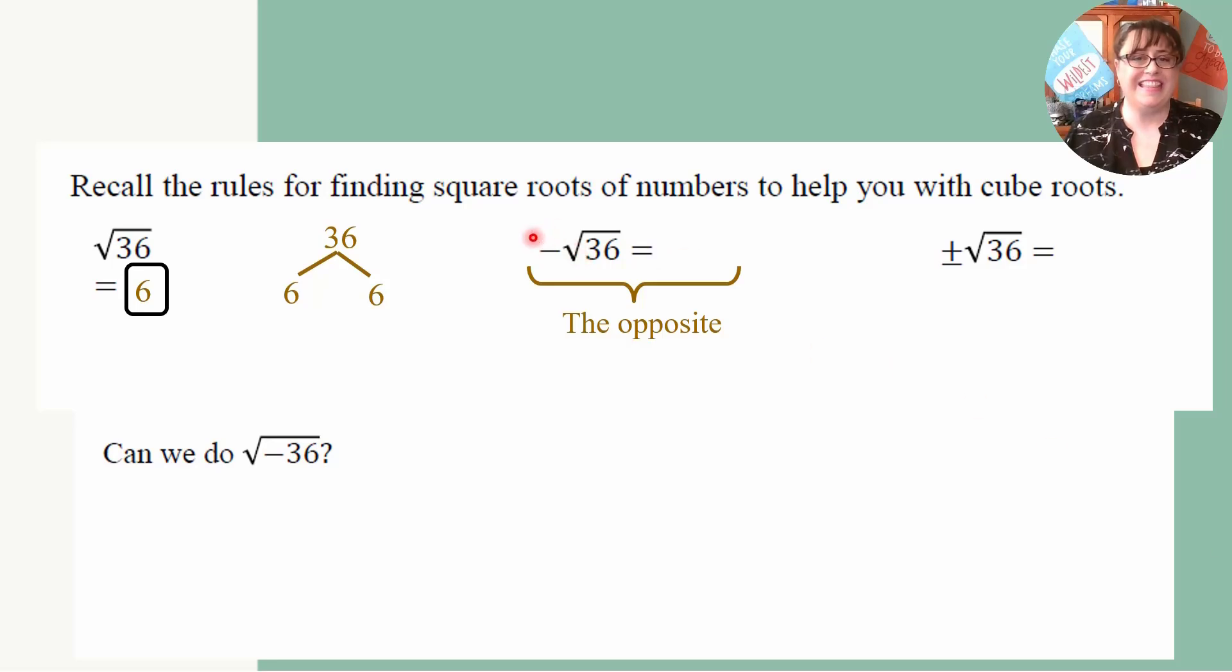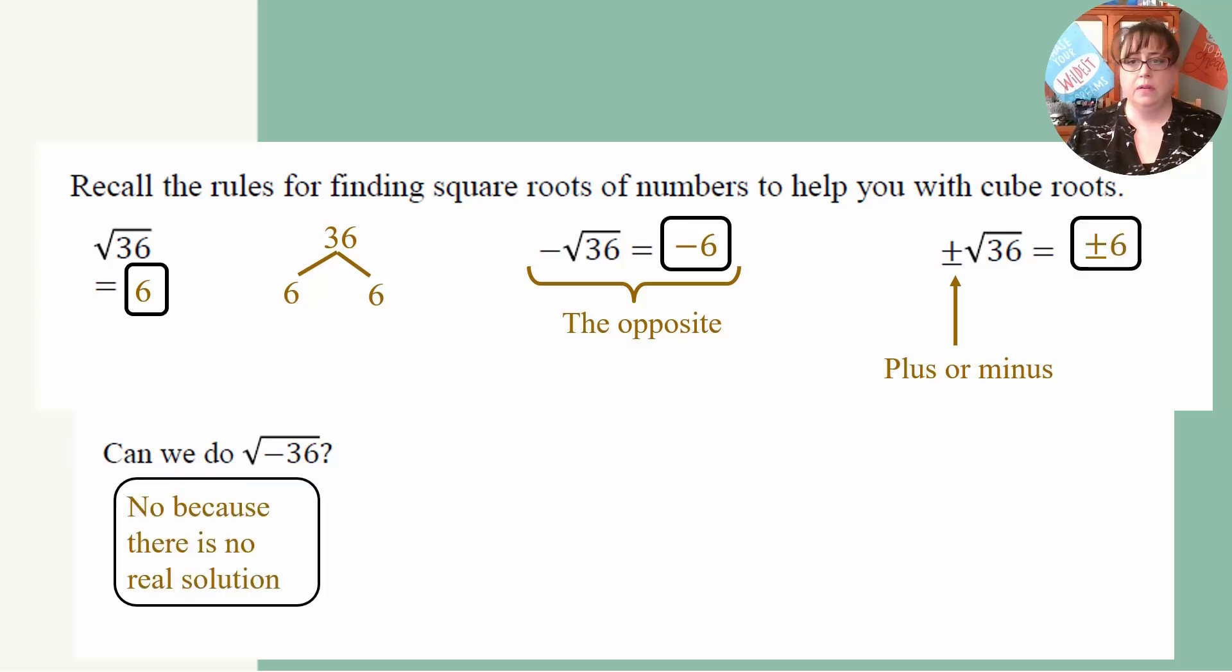Now this one is saying take the opposite of the square root of 36. Well, since we know the square root of 36 is 6, the opposite of it is going to be negative 6. And the last one is saying plus or minus the square root of 36. And so we just need to remember to put the plus or minus in.